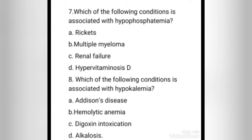In Addison disease, adrenocortical insufficiency results in low levels of adrenal corticosteroid hormones including aldosterone and cortisol. Because these hormones promote reabsorption of sodium and secretion of potassium by the collecting tubules, patients with Addison disease display hyperkalemia and hyponatremia. Hemolytic anemia and digoxin intoxication cause release of intracellular potassium. Alkalosis causes potassium to move from the extracellular fluid into the cell as hydrogen ions move from the cell into extracellular fluid to compensate for alkalosis. So the right answer is option D.